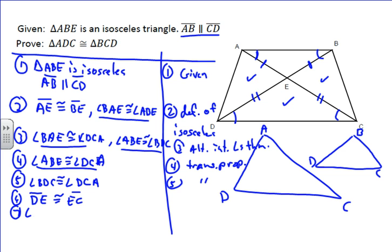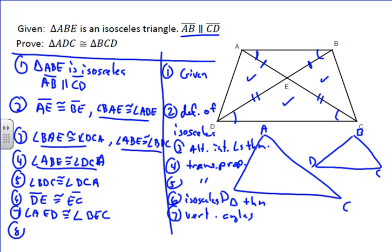Now when I say that angle AED is congruent to angle BEC, I can say that's the case because of vertical angles, and my reason back there on step 6 was just isosceles triangle theorem. And so now I can make the claim that these little triangles, triangle AED is congruent to triangle BEC, and that is by side angle side.